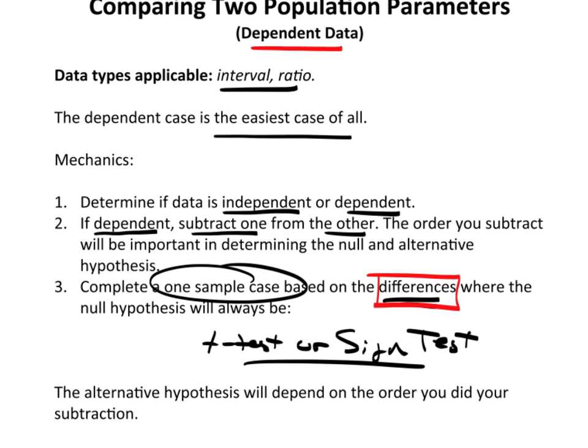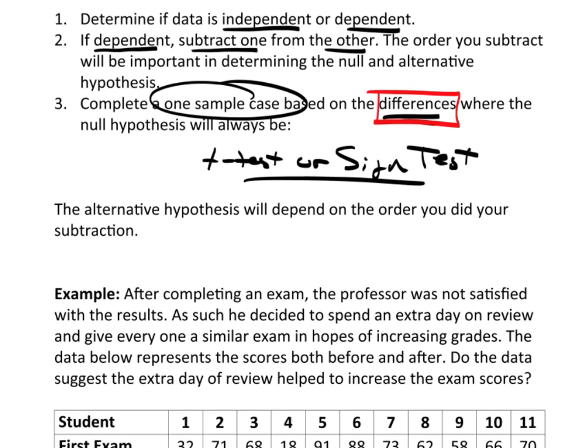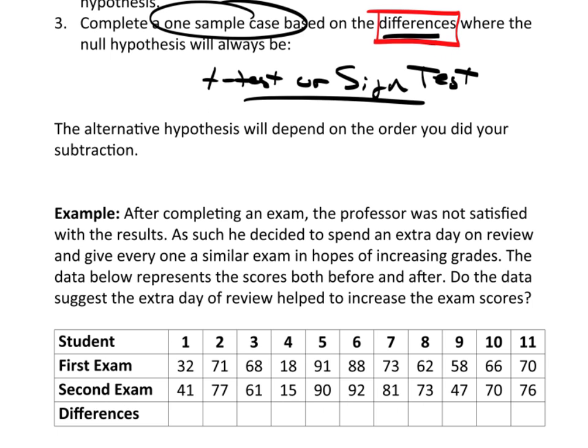The alternative hypothesis will depend greatly on the order that you subtract. Let's take a look at this example. After completing an exam, the professor was not satisfied with the results. As such, he decided to spend an extra day on review and give everyone a similar exam in hopes of increasing grades. The data below represents the scores both before and after. Do the data suggest the extra day of review helped to increase the exam scores?